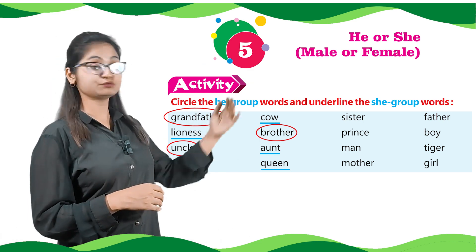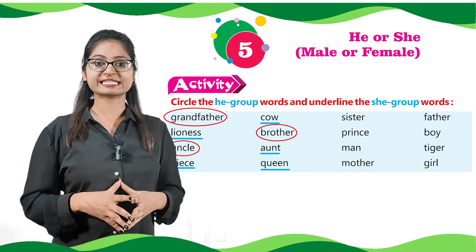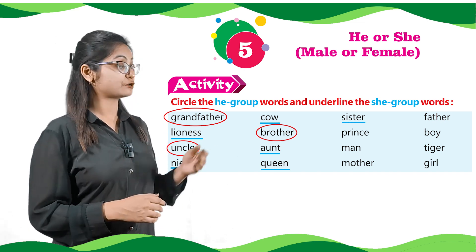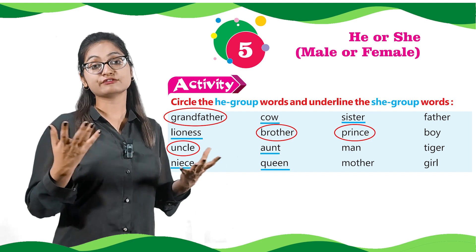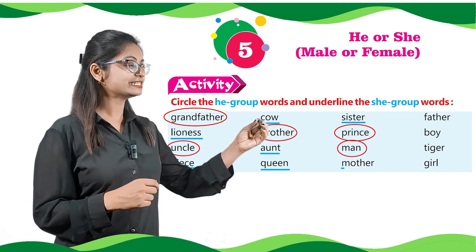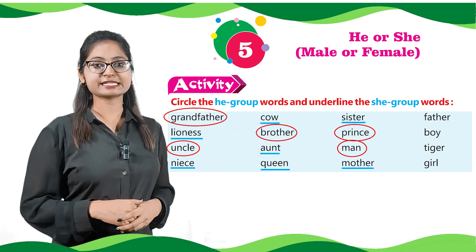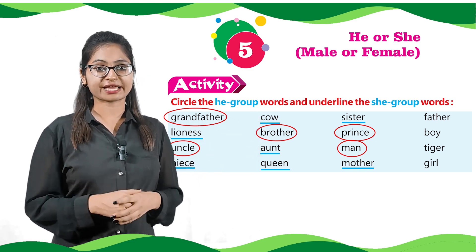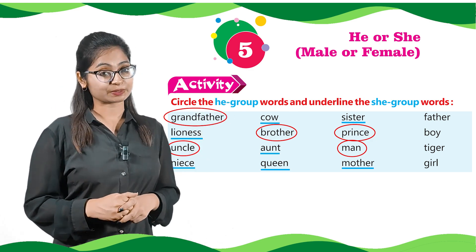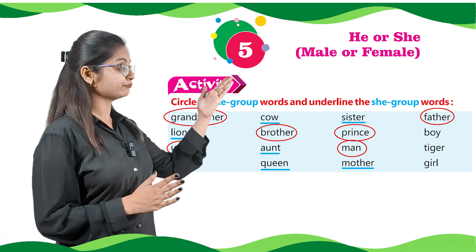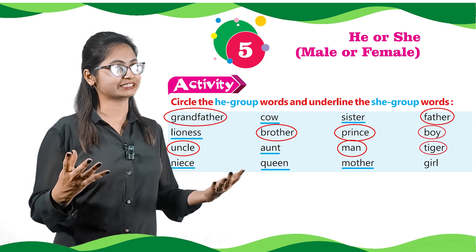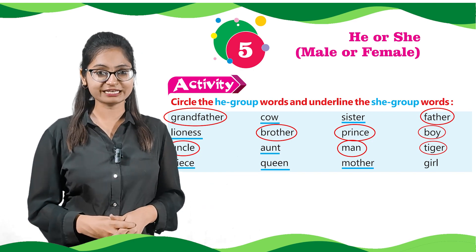In the next series of words we have sister — underline, prince — circle, man — circle, and mother — underline. Next series: father — circle, boy — circle, tiger — circle, and girl — underline.